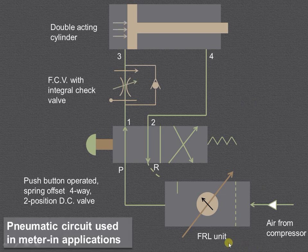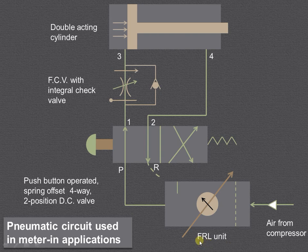Let us start with the first component, the FRL unit - that is filter, regulator, and lubricator unit. Then we have the direction control valve, which is push button operated and spring offset or spring controlled.